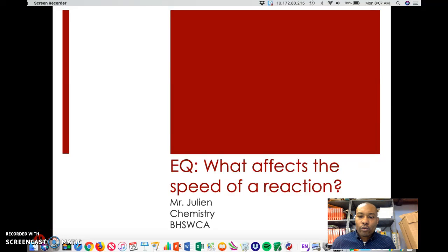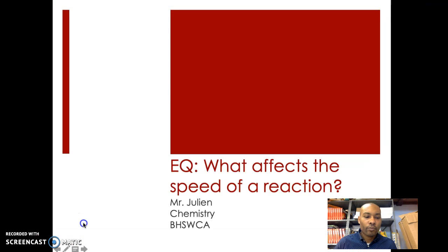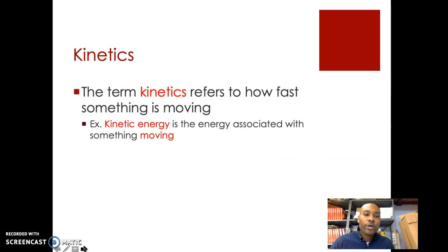Today we're going to take a look at what affects the speed of a chemical reaction. The first thing we need to talk about is what we mean by the term kinetics. Kinetics refers to how fast something is moving — for example, kinetic energy is the energy associated with something moving. In this branch of chemistry, we're going to be focusing on factors that affect how fast or how slow a reaction proceeds.